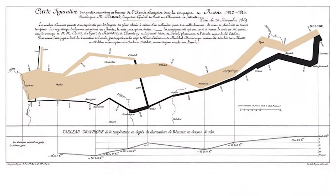Here is maybe my favorite visualization of all time: Minard's diagram showing Napoleon's army on the invasion of Russia in 1812–1813. The tannish color and the width of that arrow indicates the size of Napoleon's army in a geographic context. Over here on the left is the west — France — and then it moves all the way to Moscow. As the army moves, you can see that width decrease, which means the army is losing soldiers.